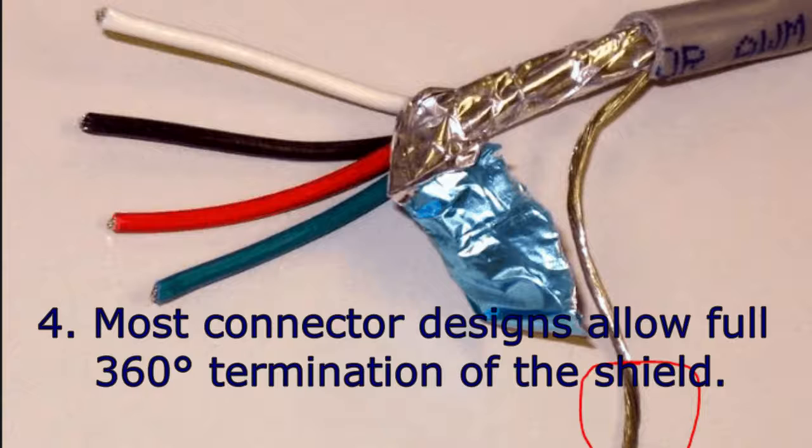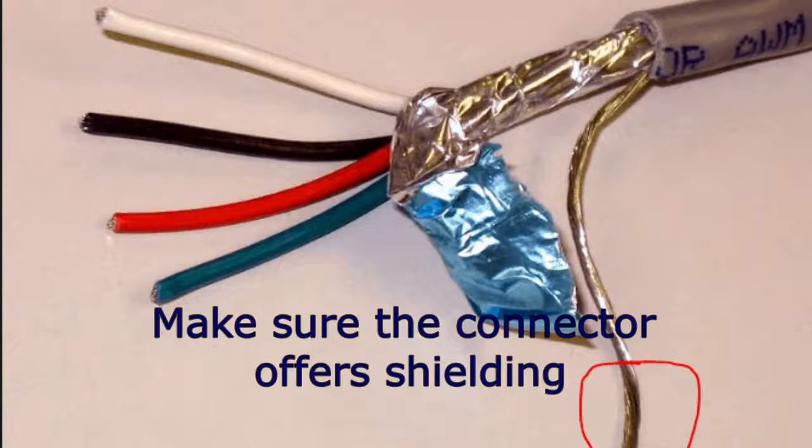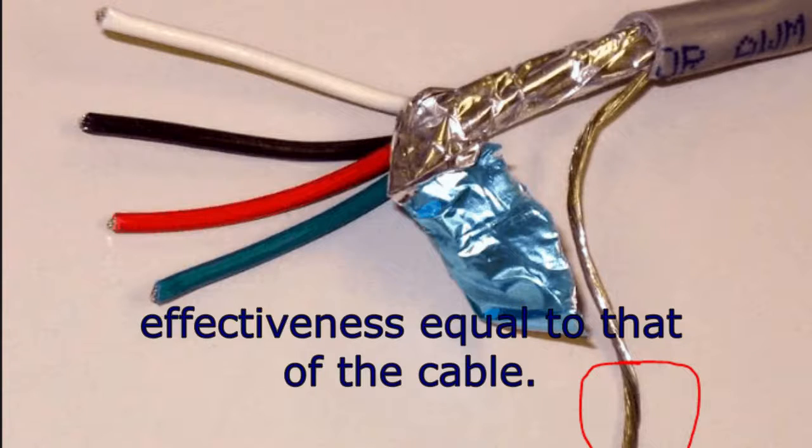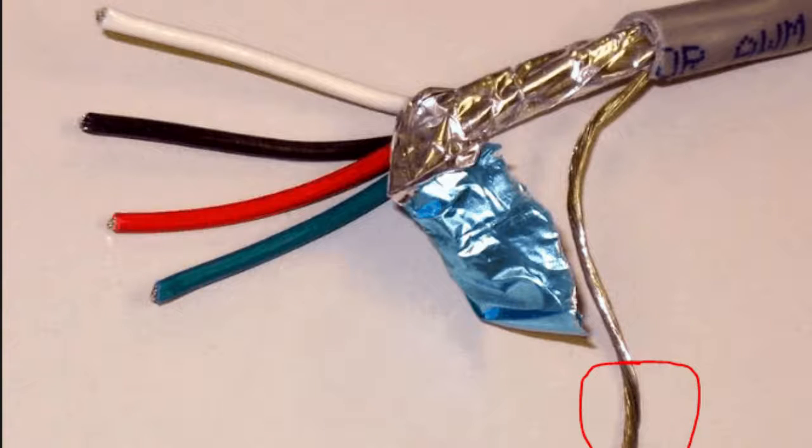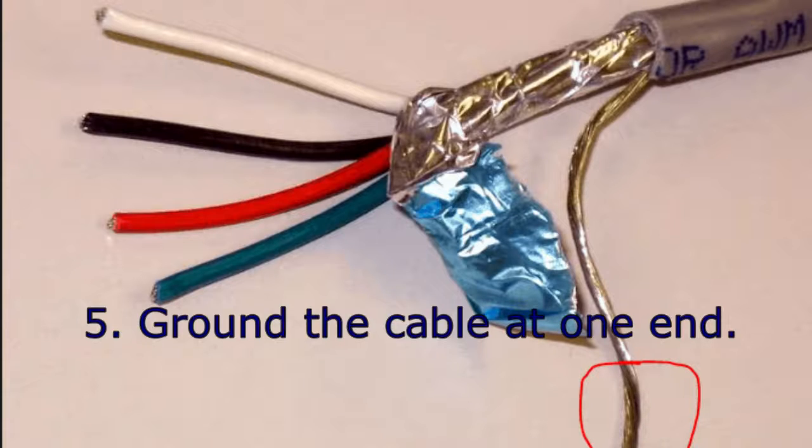Four, most connector designs allow full 360-degree termination of the shield. Make sure the connector offers shielding effectiveness equal to that of the cable. For example, many common connectors are offered with metal-coated plastic, cast zinc, or aluminum backshells. Avoid both over-specifying and paying for more than you need, or under-specifying and getting poor shielding performance.